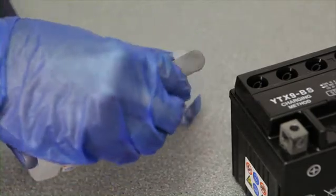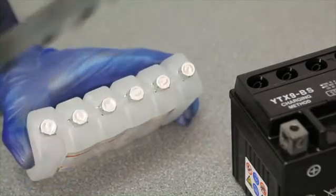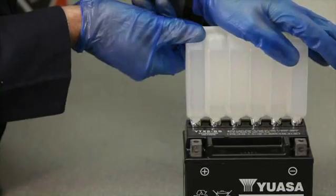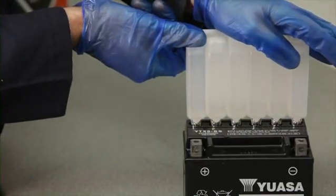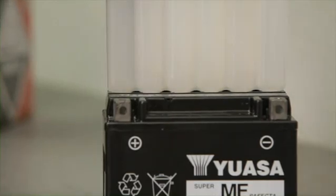Detach the cap strip from the container and put it to one side. This will be used to seal the battery when charging is complete. The electrolyte container is made up of individual cells, each sealed at the top. Place it upside down into the filler ports of the battery. Ensure it's level and push it down to break the seals on the cells.